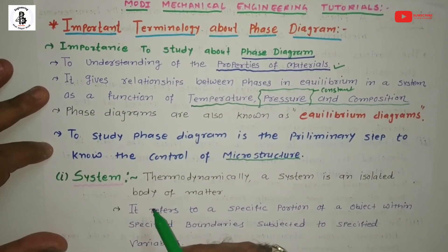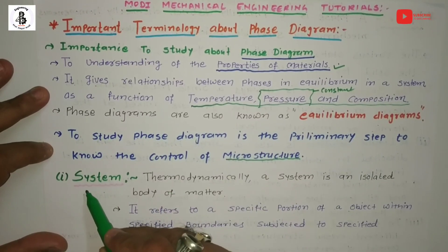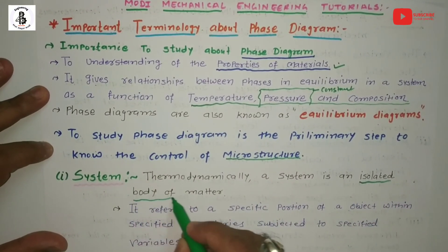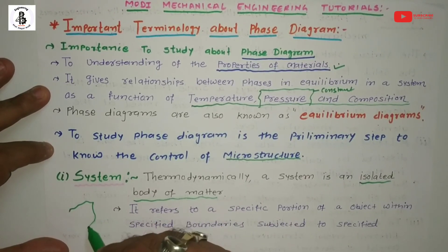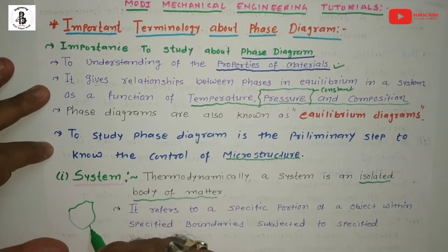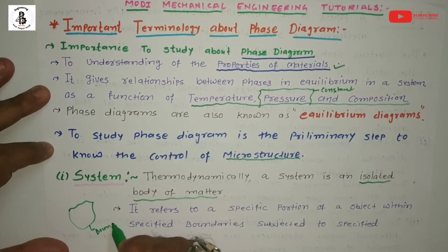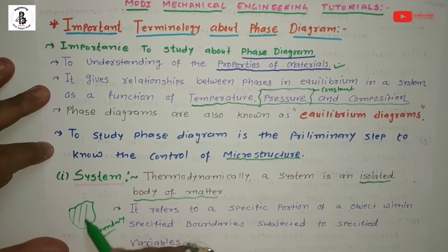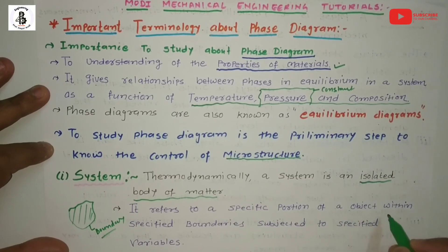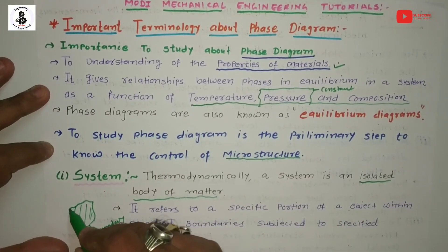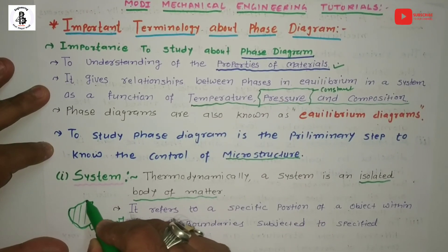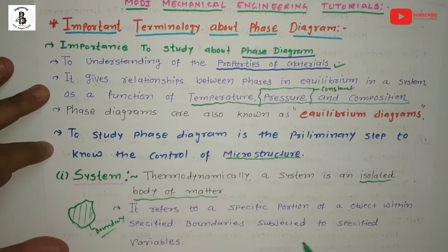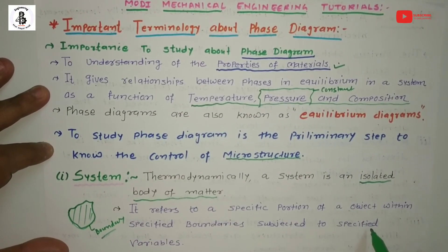The first terminology used in phase diagrams is 'system.' Thermodynamically, a system is an isolated body of matter specified by boundaries. The system refers to a specific portion of an object within a specified boundary, which is subjected to specified variables.